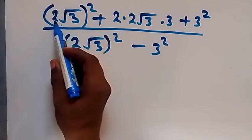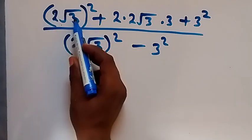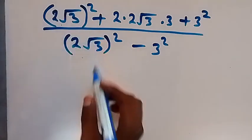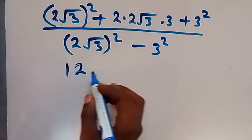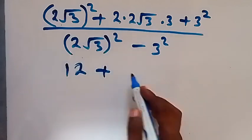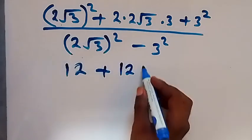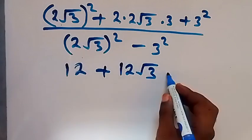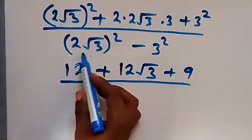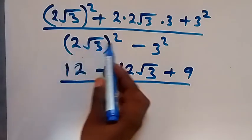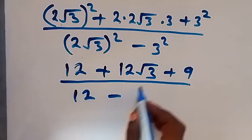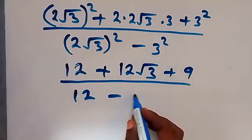In the numerator: 2 squared is 4 and root 3 squared is 3, so 4 times 3 gives 12; then plus 2 times 2 times 3 which is 4 times 3 = 12 root 3; then plus 3 squared which is 9. In the denominator: 2 squared times 3 gives 12, then minus 3 squared which is 9.